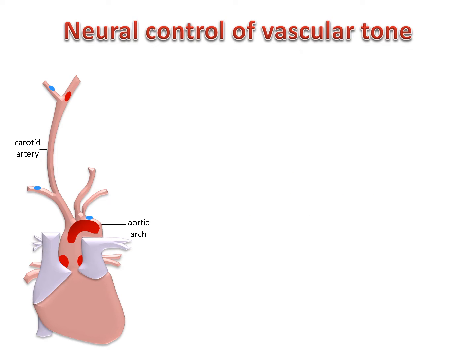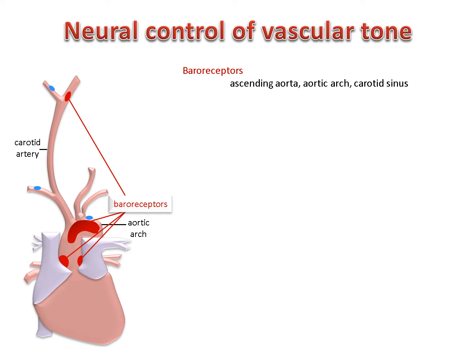The central nervous system detects changes in the systemic circulation through neural signals relayed from receptors located in the walls of major arteries. A rise in blood pressure is detected by baroreceptors in the ascending aorta, aortic arch, and carotid sinus. These are sensory nerve endings that respond to stretch in the vessel wall as blood pressure increases. Increased stretch increases the rate of action potential firing, while reduced stretch decreases the firing rate.